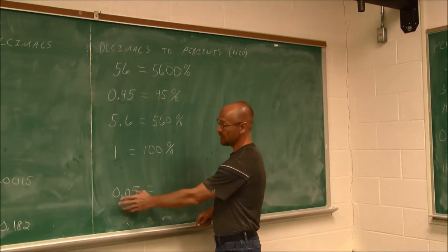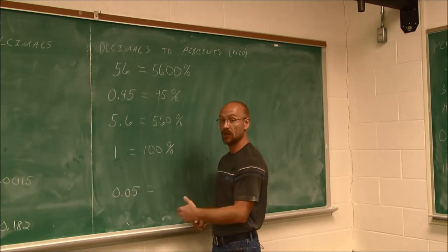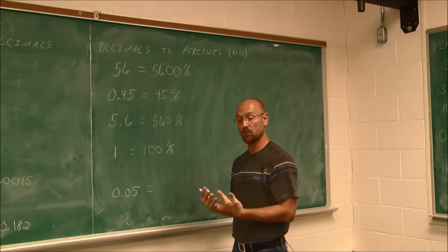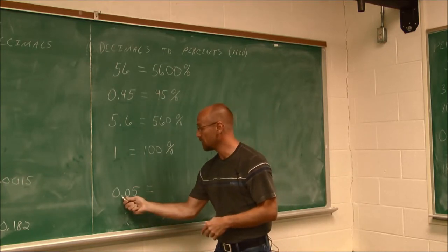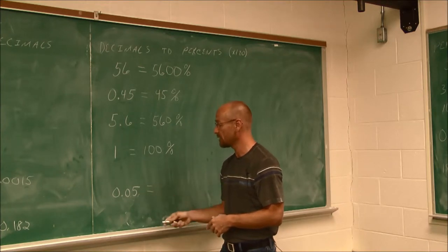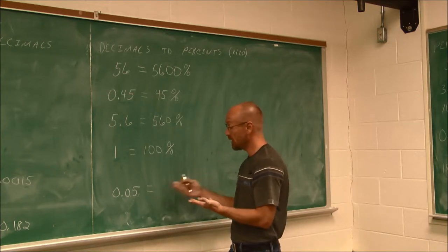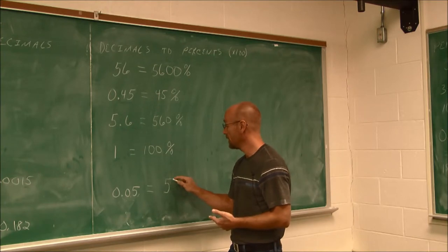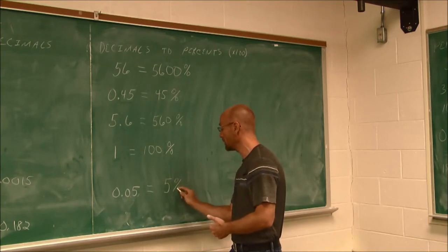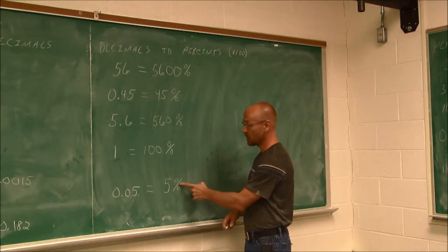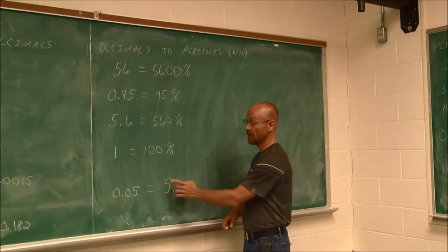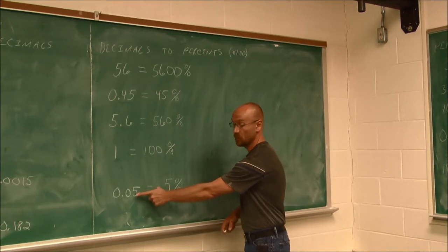For 0.05, we multiply by 100 by moving the decimal two spots to the right, giving us 5.0, which is just 5. Because we converted to a percent, we denote it as 5%. And indeed, 5 divided by 100 is 0.05, or 5 one-hundredths.